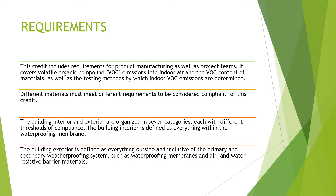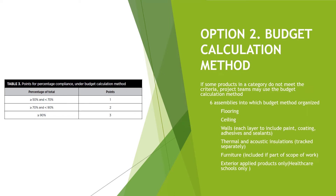This credit includes requirements for product manufacturing as well as project teams. It covers volatile organic compound emissions into indoor air and the VOC content of materials. Different materials must meet different requirements to be considered compliant. The interior and exterior of the building are organized into seven categories with different thresholds of compliance. The building interior is defined as everything within the waterproofing membrane and the exterior is everything outside the waterproofing membrane, inclusive of the primary and secondary weatherproofing systems.